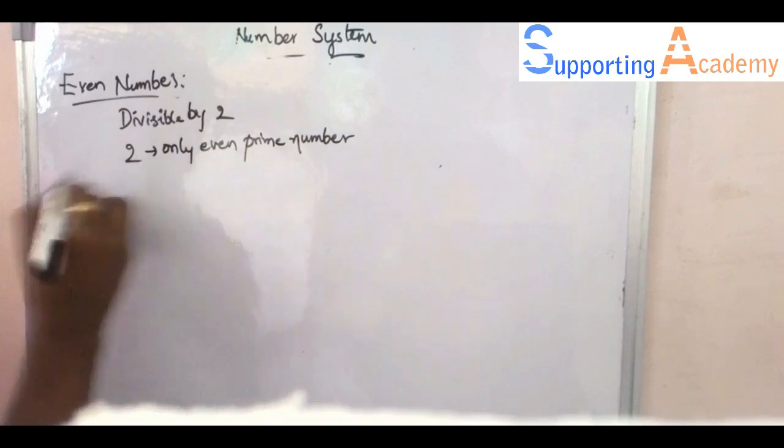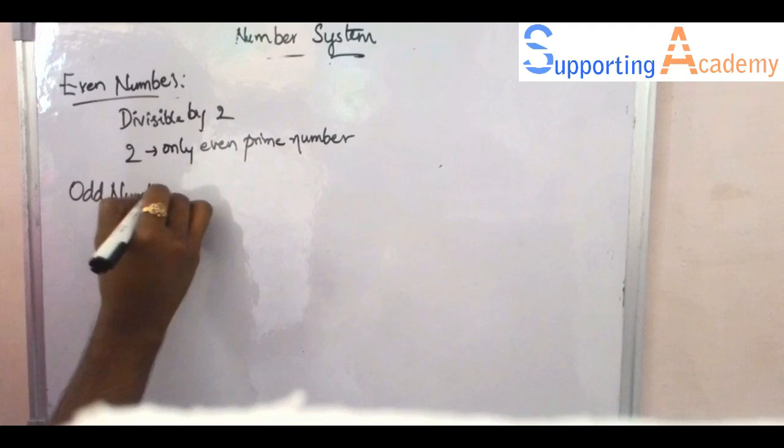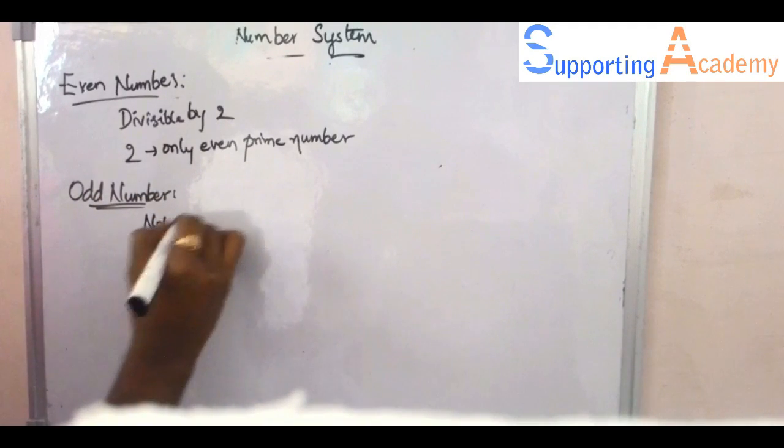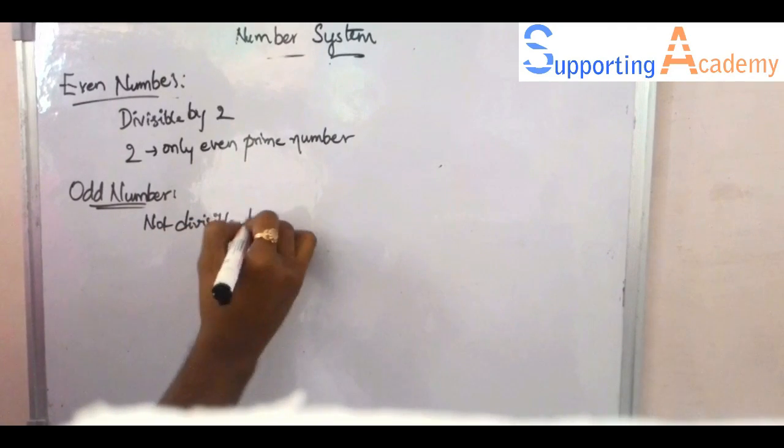And odd numbers, the numbers which are not divisible by 2. Like the numbers which end with 1, 3, 5, 7, 9. These are the numbers which are called as odd numbers.